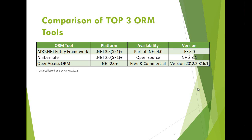Let's compare the top three ORM tools: Entity Framework by Microsoft, NHibernate, and OpenAccess ORM by Telerik. Entity Framework supports .NET 3.5 SP1 onwards and is also available as part of the open framework; the current version released a few months ago was 5.0. NHibernate supports .NET 2.0 SP1 onwards, is open source, and the current version is 3.3.1. OpenAccess ORM supports .NET 2.0 onwards, is free as well as commercial, and the latest version is 2012.2.